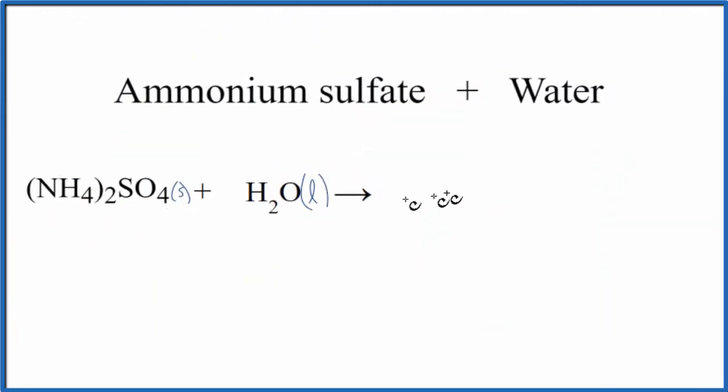So we'll take NH4 plus, and the ammonium ion, we said that's going to dissolve in water. So we put an AQ for aqueous. We should also note this little subscript here, this 2. This 2 tells us that we're going to have 2 ammonium ions when ammonium sulfate dissolves in water.